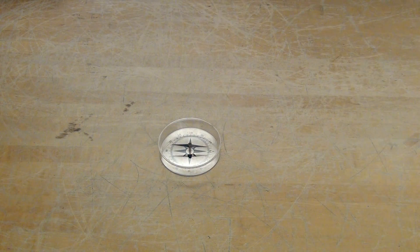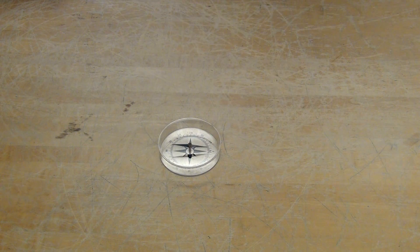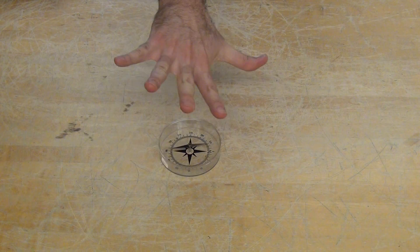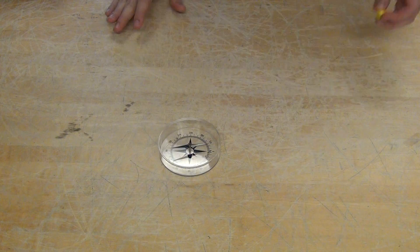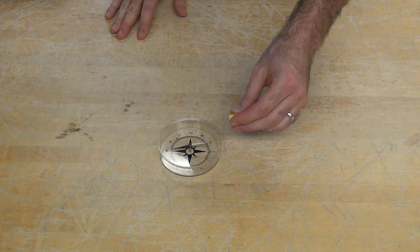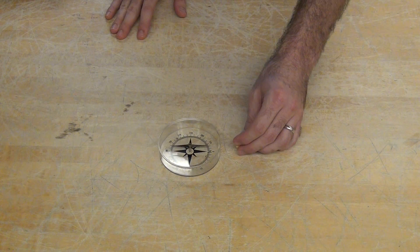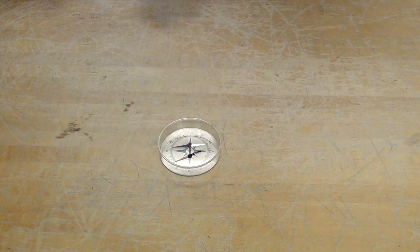But a compass isn't completely free to rotate. It can spin around this way, but it can't, for instance, spin this way. If a local magnetic field goes into or out of the plane, the compass is somewhat constrained in how it can deal with that.